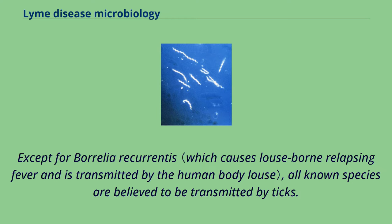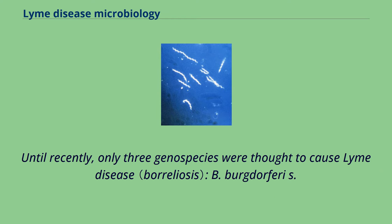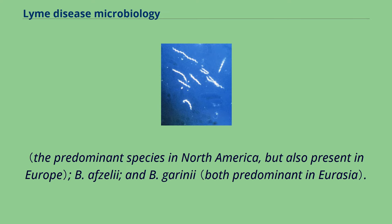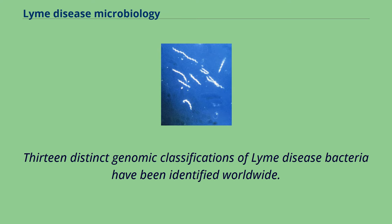The strains differ in clinical symptoms and/or presentation as well as geographic distribution. Except for Borrelia recurrentis, all known species are believed to be transmitted by ticks. Until recently, only three genospecies were thought to cause Lyme disease: B. burgdorferi s.s., B. afzelii, and B. garinii. Thirteen distinct genomic classifications of Lyme disease bacteria have been identified worldwide.